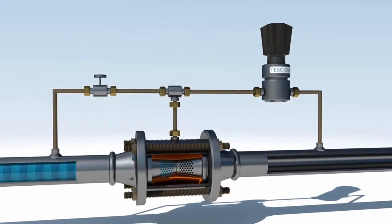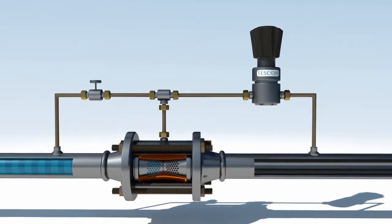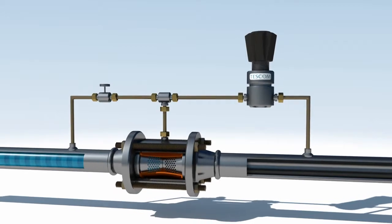The SureFlow pressure reducing valve adjusts to increase and decrease flow to keep downstream pressure exactly at the desired set pressure.